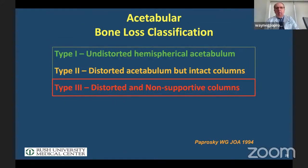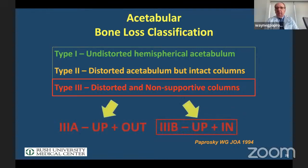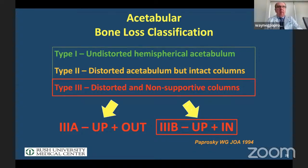We'll focus today on type three defects, which differ from type twos where columns are intact and no extra support is needed. In a type three, up-and-out defects need secondary support, while up-and-in defects, until proven otherwise, need some form of primary reconstruction. In our cases we use augments. I'll show you today how to address these up-and-in defects — how we can create a hemisphere that will take a cup.